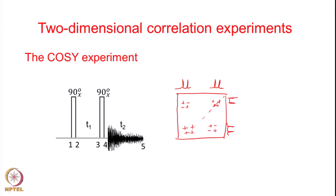This was arrived at by using a detailed product operator formalism. The diagonal peak is the so-called diagonal peak, and the cross peak is denoted as C. This originates from one spin - I call it the K spin - and this is the L spin. The transfer of coherence from the K spin to the L spin results in this cross peak, and the transfer of coherence from L spin to the K spin results in the other cross peak. The diagonal peak has in-phase characteristics, meaning plus-plus-plus-plus in all 4 components and dispersive line shapes, while the cross peaks have antiphase nature - a plus-minus-minus-plus fine structure - and they have absorptive line shape.